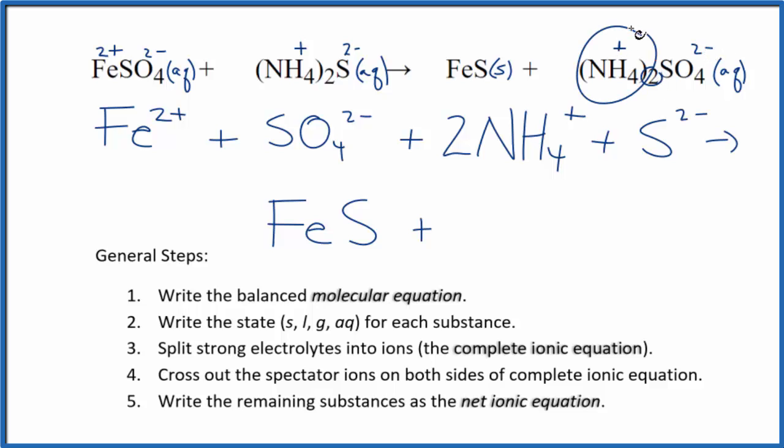So we have 2 ammonium ions, just like in the reactants. And we also have our sulfate ion, just like the reactants as well. So these are the products for our complete ionic equation.